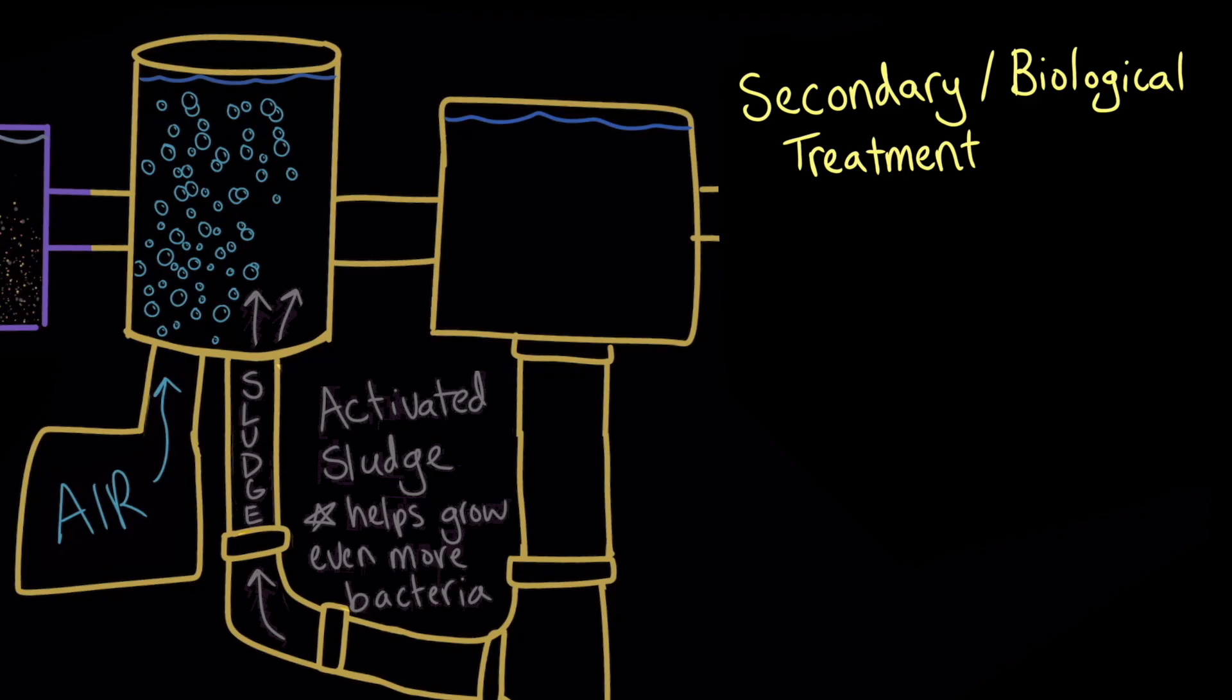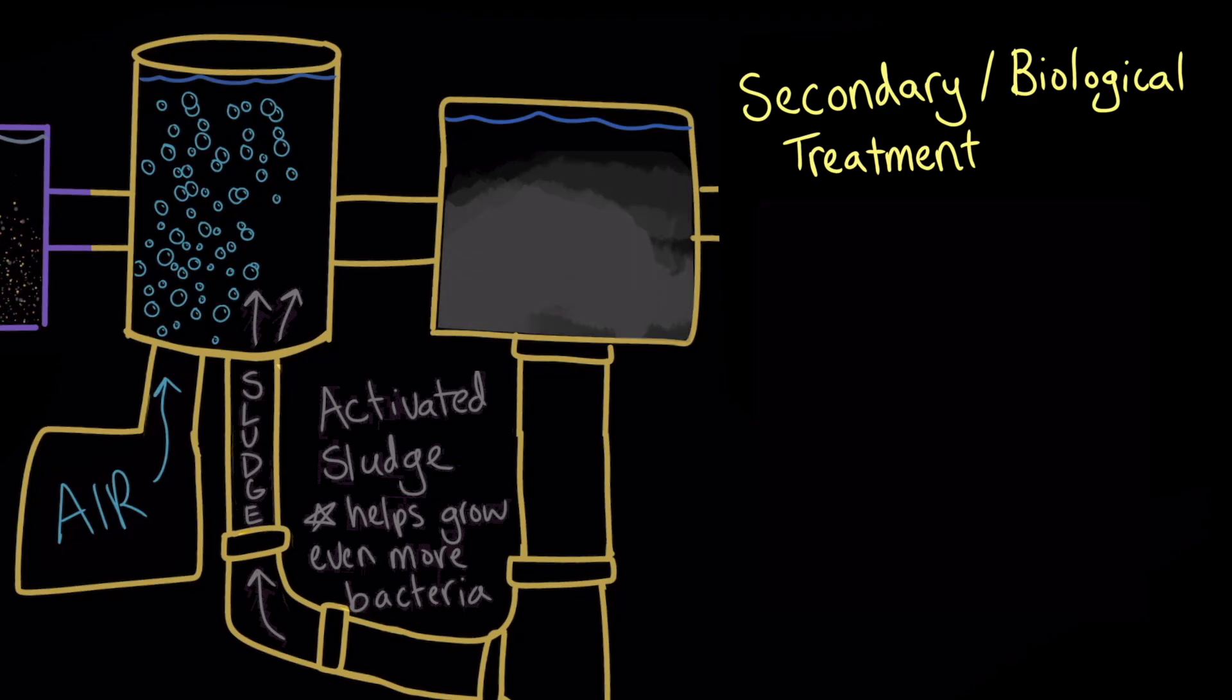Like primary treatment, secondary treatment generates lots of sludge. Some of the sludge may be recycled and added to water entering secondary treatment. This increases the population of aerobic bacteria in the wastewater, so the bacteria remove the organic waste faster.